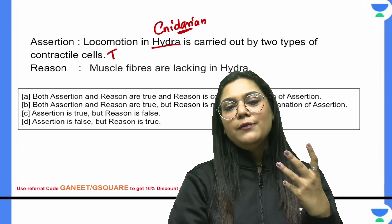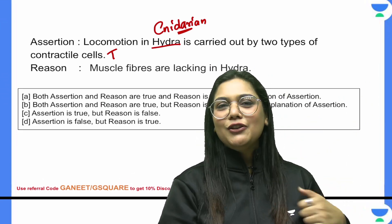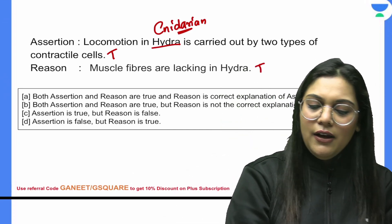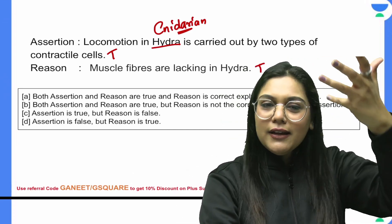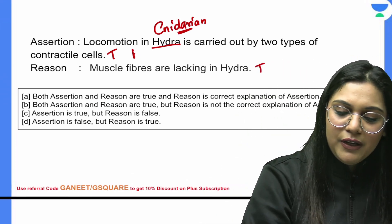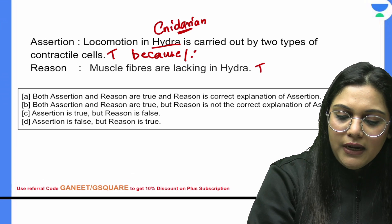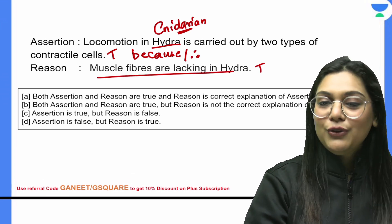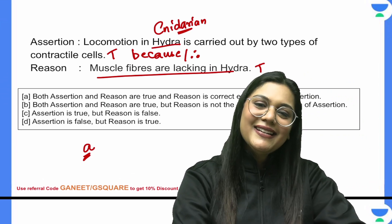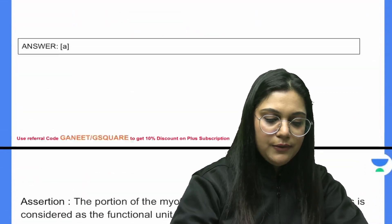Muscle fibers are lacking in hydra because it does not have muscle fibers behind it — it uses contractile cells instead. So the answer for this question would be A.